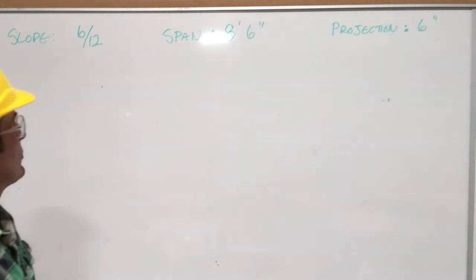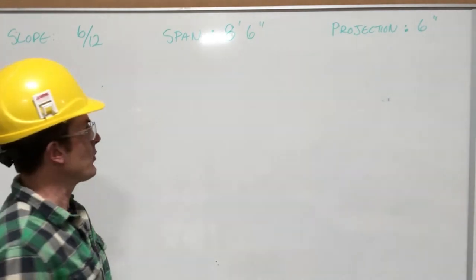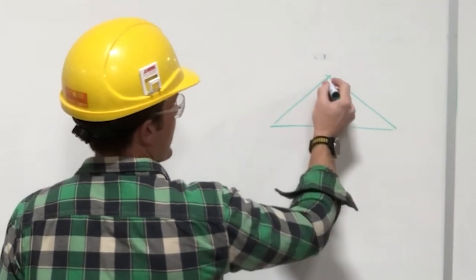So the first thing I want to take a look at is if our span is 8'6", then if you remember back to our building triangle, we have this happening here.